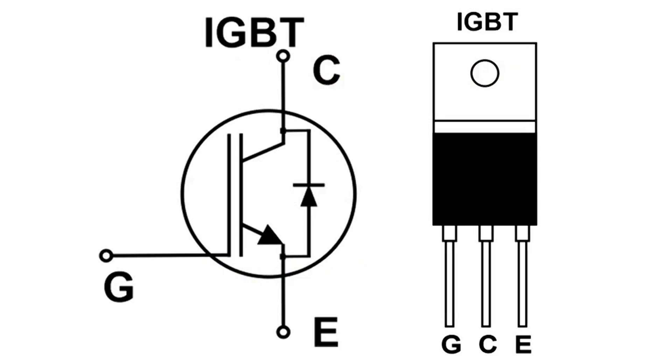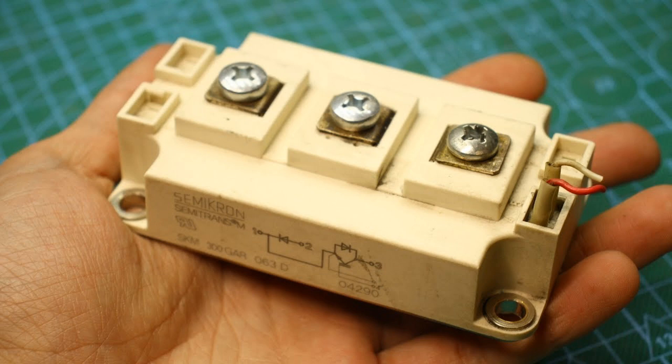It combines the characteristics of a metal oxide semiconductor field effect transistor, MOSFET, and a bipolar junction transistor, BJT, making it highly efficient for high-voltage, high-current operations.